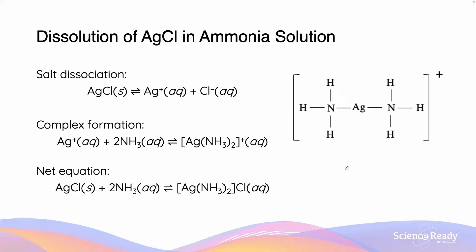Here we'll look at an example of the dissolution of silver chloride in ammonia solution to form diamine silver. First, the silver chloride salt dissociates in the ammonia solution to form the Ag⁺ ion and the Cl⁻ ion. Once in solution, the silver engages in a metal complexation reaction with ammonia to form diamine silver. Since the free Ag⁺ ion concentration decreases after complexation, the solubility of silver chloride increases in the ammonia solution, leading to the formation of more Ag⁺ ions. In the net equation, the free chloride ion still exists in solution after the formation of the silver complex. The charge is equal to 1+ from the silver ion plus 2 times 0 from the ammonia molecules, giving a charge of +1.